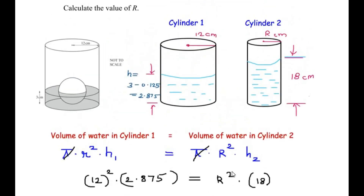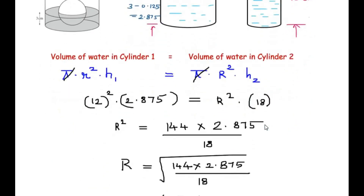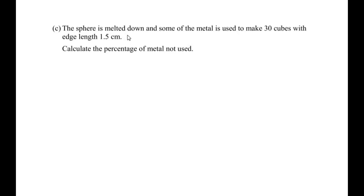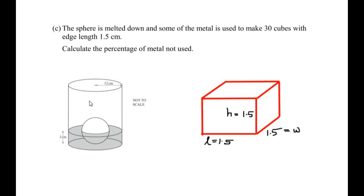Let us move on to the last part, Part C. The sphere is melted down and some of the metal is used to make 30 cubes with edge length 1.5 cm. We need to calculate the percentage of metal not used. To do this, let us first find the volume of the sphere and the volume of the 30 cubes separately.